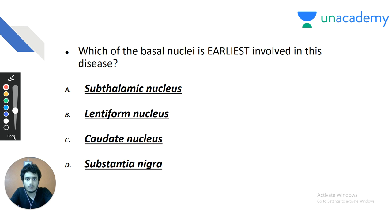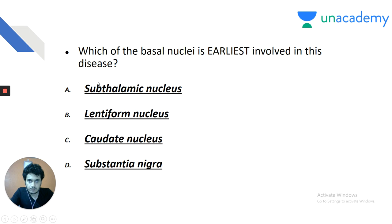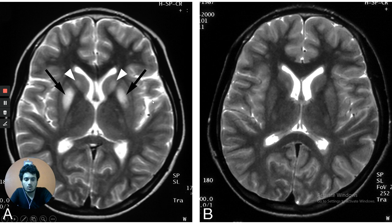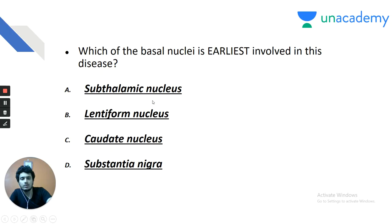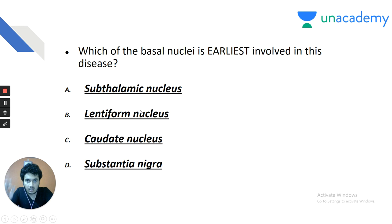The disease shows hyperintensities in the caudate and putamen with the characteristic ophthalmologic finding of the KF ring (Kaiser-Fleischer ring) — this is Wilson's disease. Copper is characteristically deposited first in the putamen. Since the lentiform nucleus includes the putamen and globus pallidus, the answer to which basal nucleus is earliest involved is the lentiform nucleus.